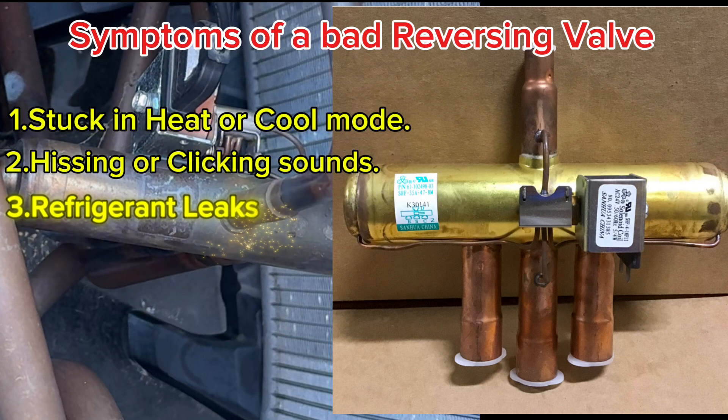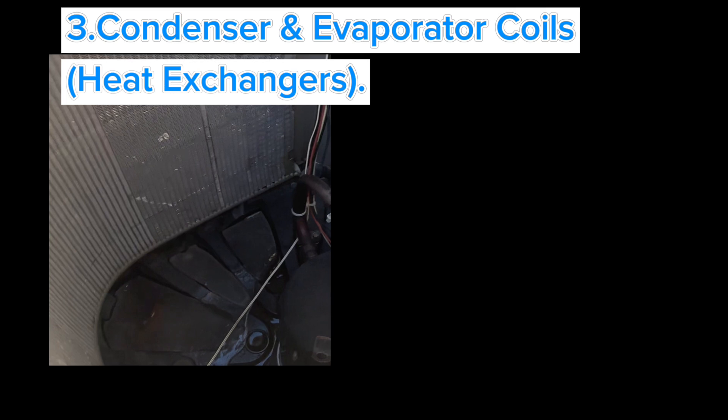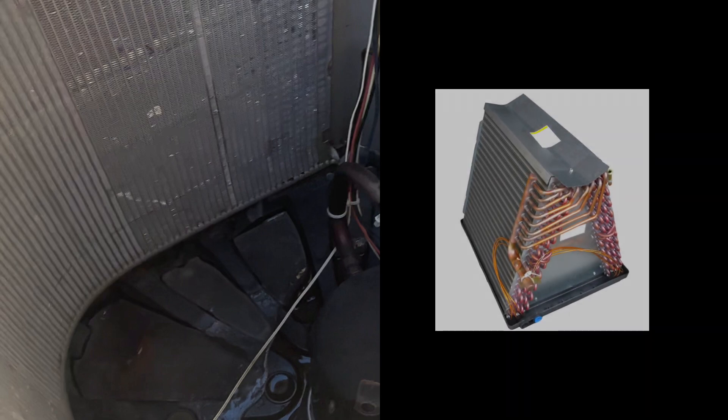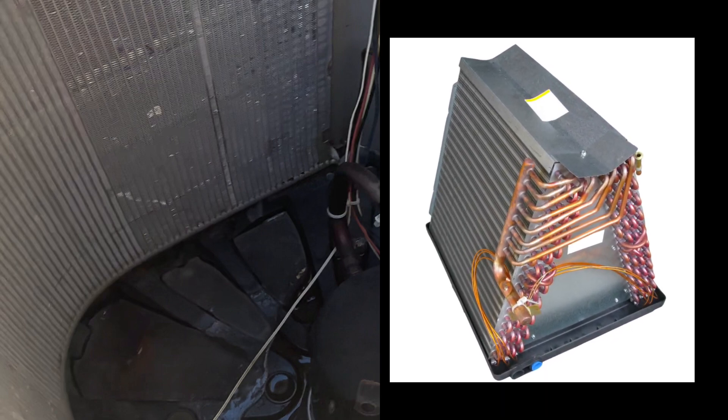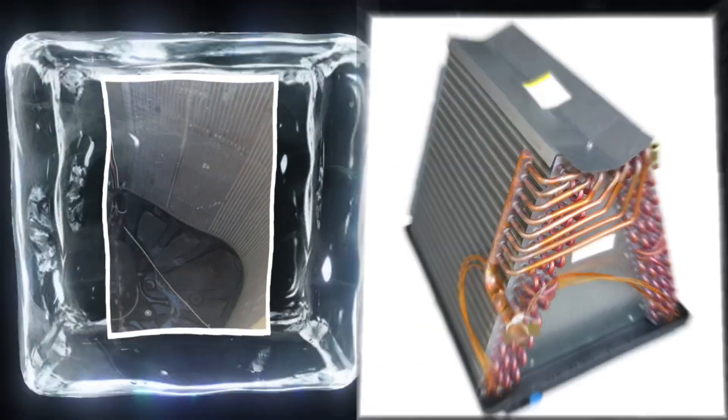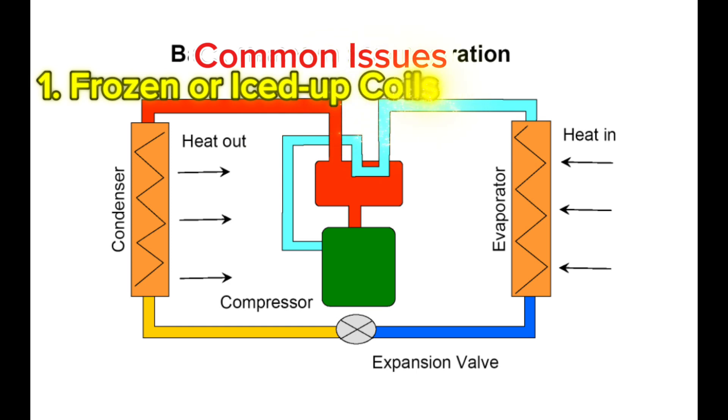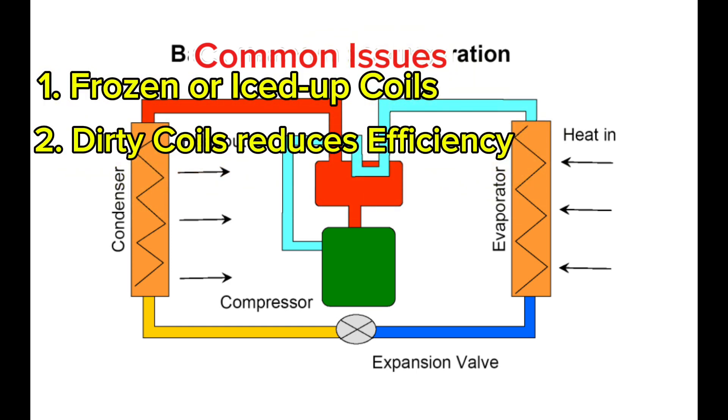Next up are the condenser coils and the evaporator coils. The condenser coils are located outside and are pictured on the left, and then the evaporator coils are the coils inside your home, located in the picture on the right. These coils are where the heat transfer happens. In heating mode, the outdoor coil absorbs heat and the indoor coil releases it into your home. And then in cool mode, it's just the reverse of that.